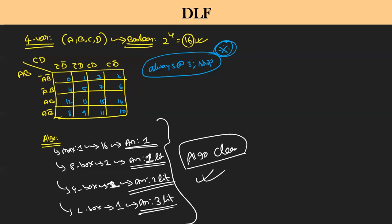To summarize the algorithm: if the answer covers all boxes — answer is 1. If 8-box grouping — answer is 1 literal. If 4-box grouping — answer is 2 literals. If 2-box grouping — answer is 3 literals.